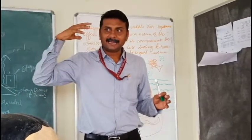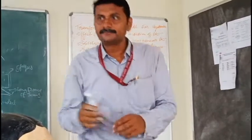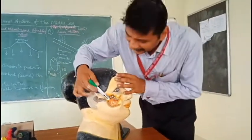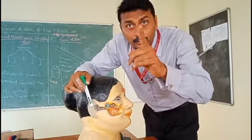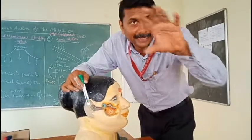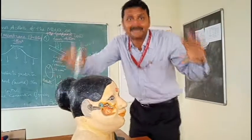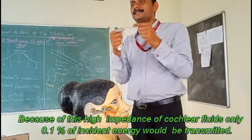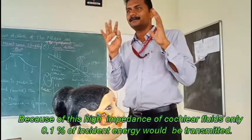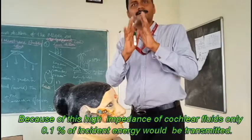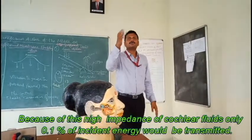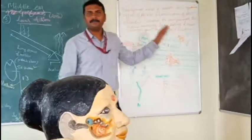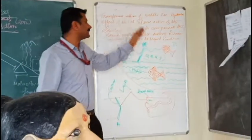The external ear is filled with air, the middle ear is filled with air, and the inner ear is filled with fluid. So sound has to go from an air medium to a fluid medium — there has to be an impedance matching done, otherwise we cannot hear a substantial amount of sound intensity. To do this impedance matching, we have the middle ear.